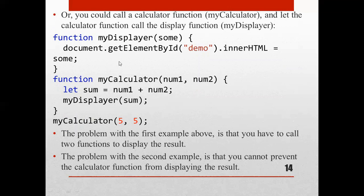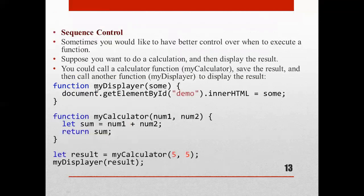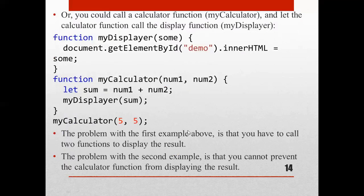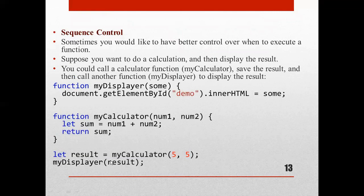Using a callback approach, we have a function myDisplay, and then a function myCalculator with parameters number1, number2, and myCallback. Inside myCalculator, we compute let sum = number1 + number2. The problem with the first example is that we have to call two functions to display the result — first myCalculator, then separately call myDisplay.